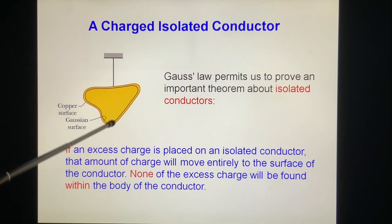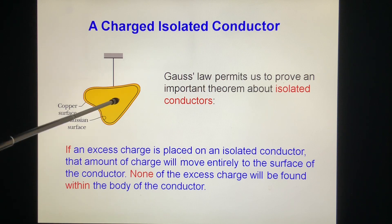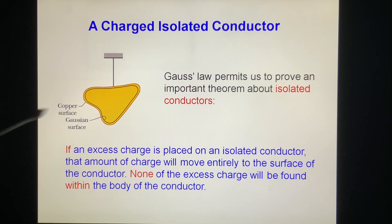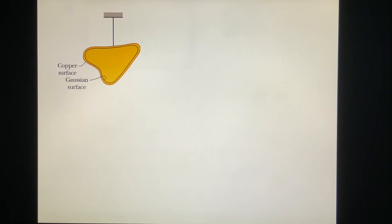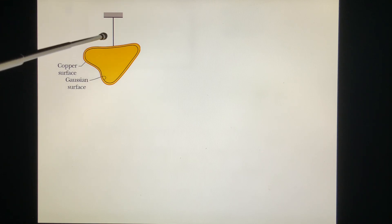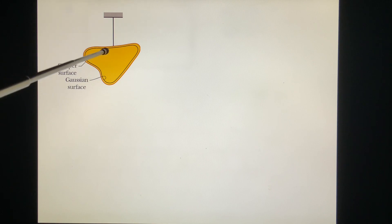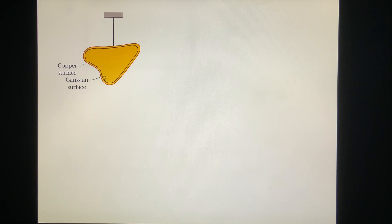This is the conductor. We see inside the conductor there is no free charge. We can make a Gaussian surface just inside the surface. Because E inside the conductor is zero, the integration of E dot dA is zero, so the Q inside is zero. Where is the charge? It is on the surface.